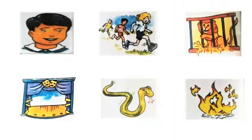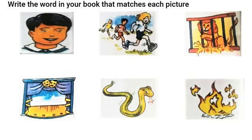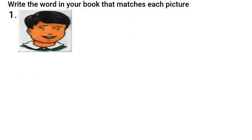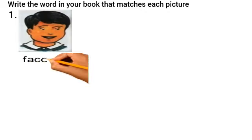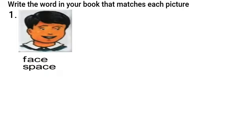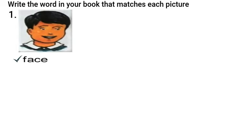Now we will do an exercise with the words we learned. Write the word in your book that matches each picture. Now look at the first picture. There are two words: face and space. You have to choose a suitable word for this picture. Can you say what the picture is of? Yes, it is a picture of a face. Face.